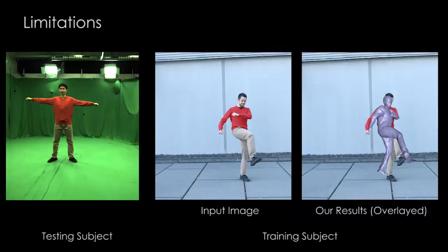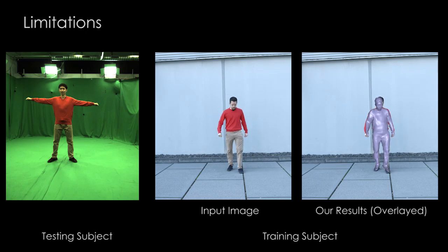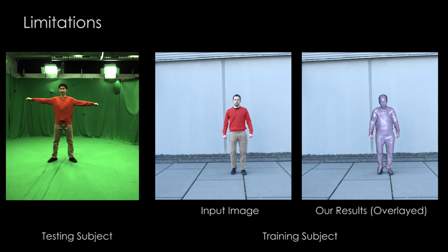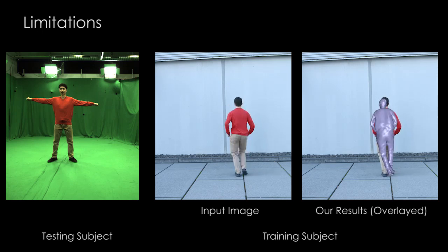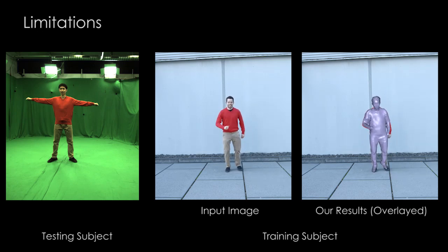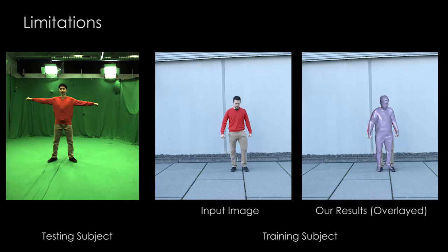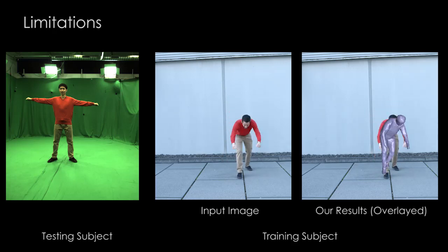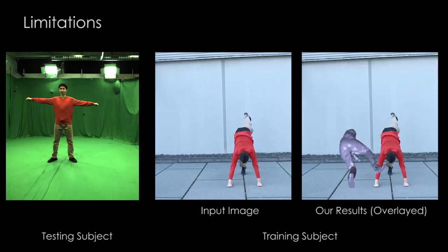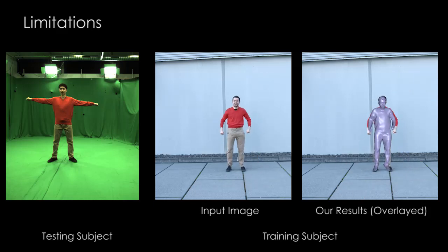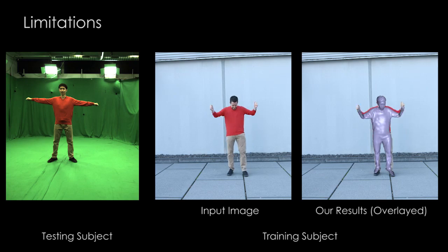Here we test our model on a different subject than the one used for training, but both wear the same clothes. One can see that our method still gives plausible results, but as the training identity changes between training and testing, the accuracy drops. Further, for extreme poses like a handstand that were not seen during training, our method can fail. But note that it recovers once the pose is again within the training distribution.